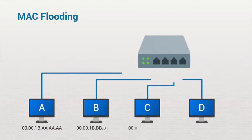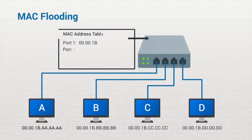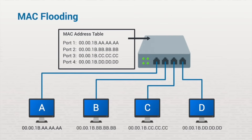The first attack to examine is MAC flooding. Switches maintain MAC address tables, sometimes called content access memory tables or CAM tables, to track workstation and port associations. Switches learn which workstation is connected to each port, and that information is stored in the MAC address table and used when switches forward information.